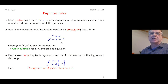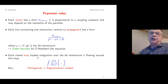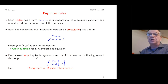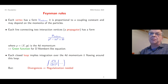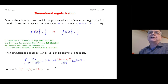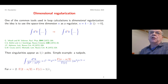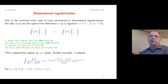The propagator is like a Green's function for a d'Alembert-like equation. Each closed loop implies integration over four-dimensional momentum k flowing around the loop. As a result of this integration we may get divergences, so we need some kind of regularization to parameterize these divergent quantities.